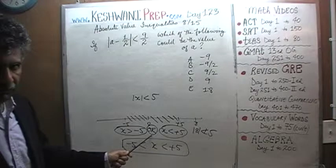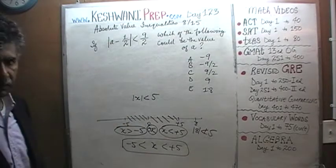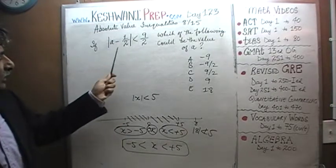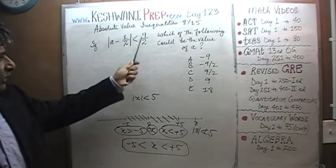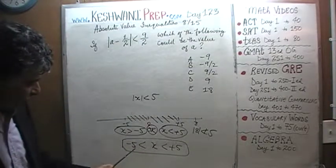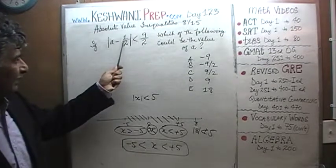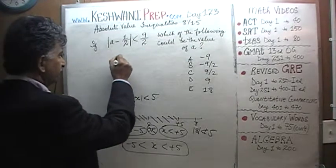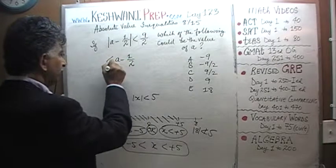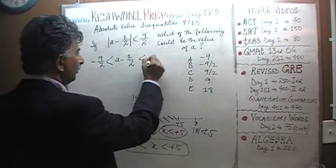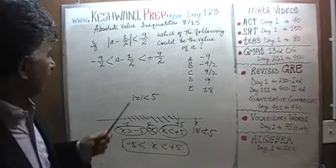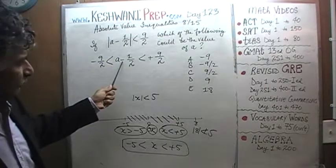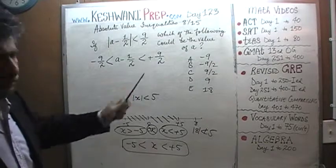The exact same logic, technique, and method apply to our main problem. The only difference is that instead of X, we have A minus one-half, and instead of five, we have nine over two. So A minus one-half will have to lie between negative nine-halves and positive nine-halves.